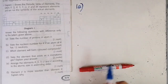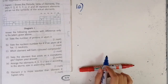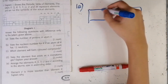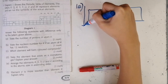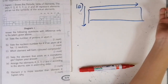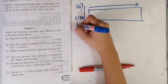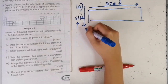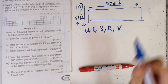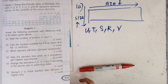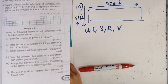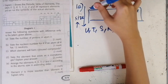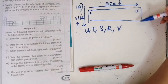Question 1e: arrange the elements R, S, D, U, V according to atomic size in ascending order. This is quite tricky. Think of the periodic table: as you go down a group, the size increases; as you go to the right across a period, the size decreases. Analyzing each element's position slowly, the answer in ascending order is: U, D, S, R, V. U is the smallest because it is at the top right.